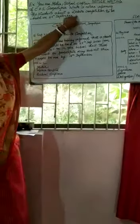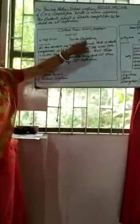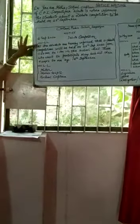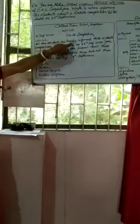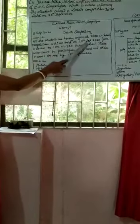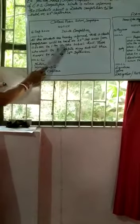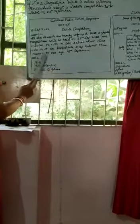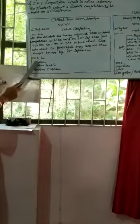Then you write the main heading: Debate Competition. You leave one line and start writing the body: 'All the students are hereby informed that a debate competition will be held on 25th September 2020 from 11am to 1pm in the school hall. Those who want to participate may submit their names to me by 18th September.' Then you leave one line and write the signature, name, and designation of the school captain.